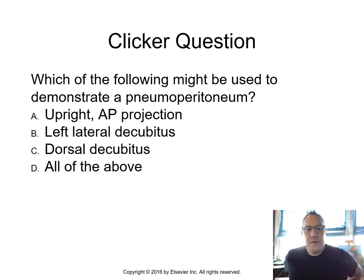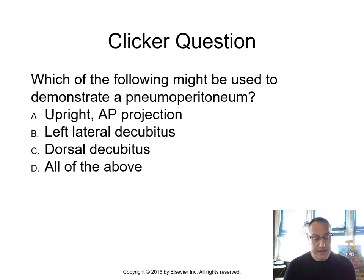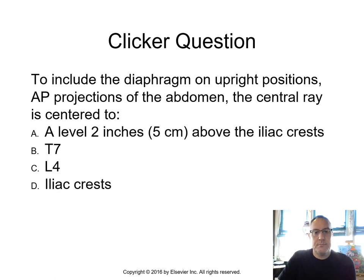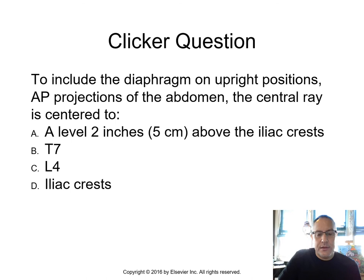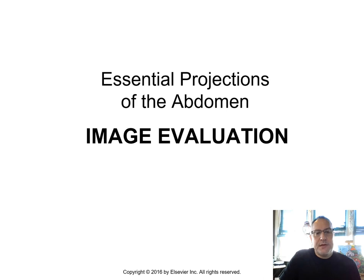Practice question: Which of the following might be used to demonstrate a pneumoperitoneum? Free air can be seen on the upright, the left lateral decubitus, and the dorsal decubitus — so the answer is all of those. To include the diaphragm on upright AP projections of the abdomen, the central ray must be centered two inches above the iliac crest — not at the iliac crest — so we don't clip the diaphragm.